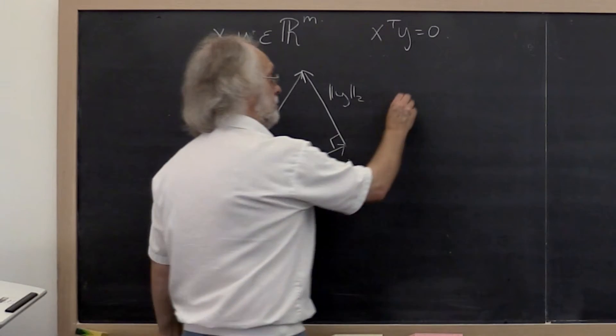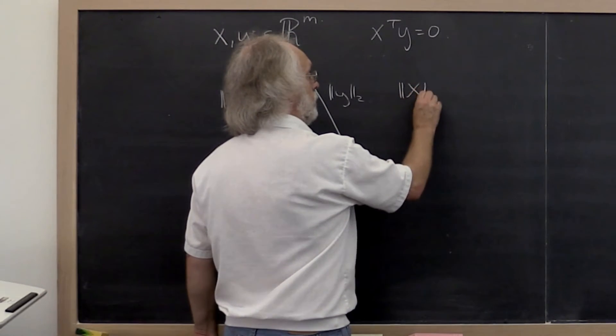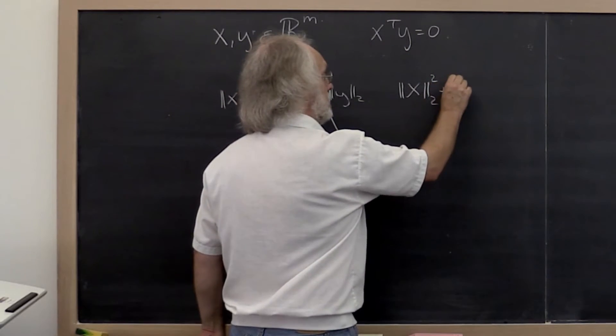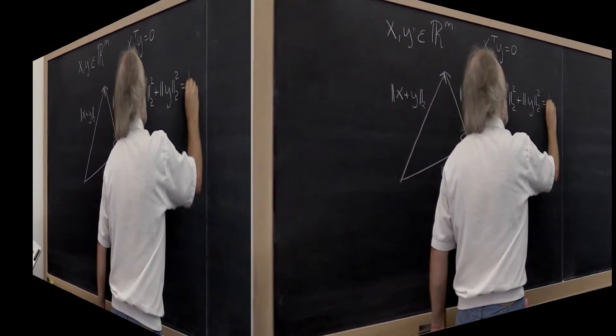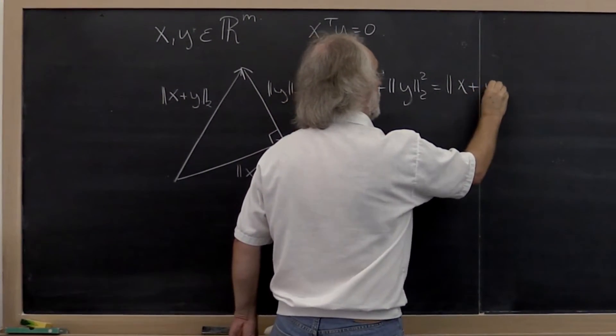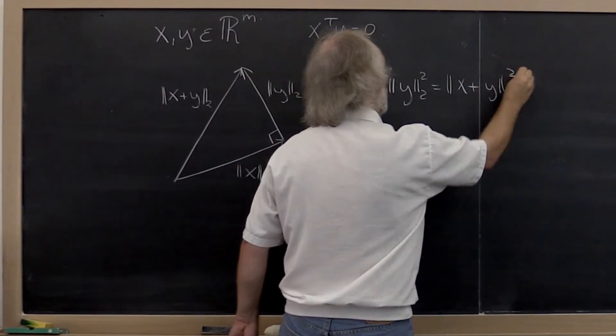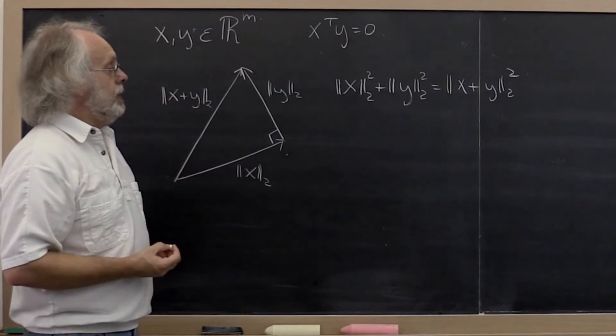What does that mean? The two-norm of x squared plus the two-norm of y squared must be equal to the two-norm of x plus y squared. Let's see what that means about x and y.